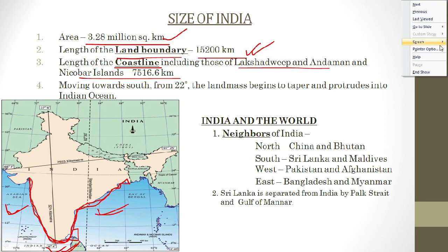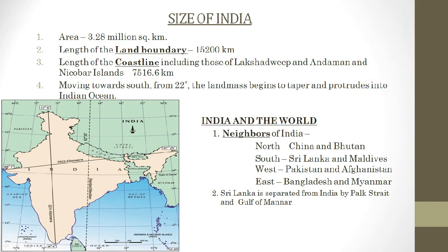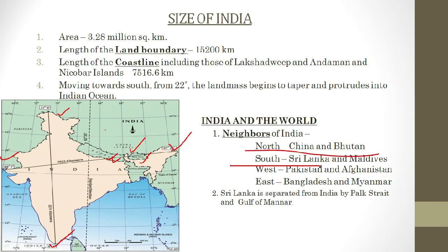Now let us learn about the neighbors of India using cardinal directions. To the north, just opposite of north is south, to the right is east, and to the left is west. Looking north, you can find two countries: China and Bhutan. We can also see Nepal in the north.